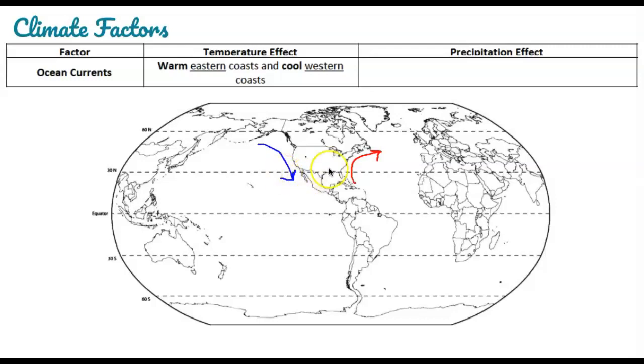And you can extend this pattern globally because of the gyres that we talked about when we were learning about ocean currents. Over here on the west coast of Europe and Africa, you have a colder current, so that's going to cause the climate to be cooler here. Whereas when you're looking at the east coast of Japan and Asia there, that is a warmer current area, which is causing a warmer climate.